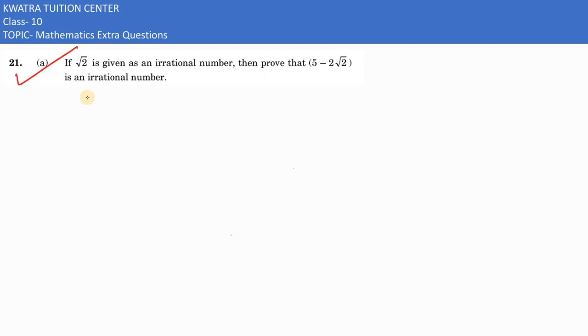So now in the 21st part, it's given that root 2 is an irrational number and you need to prove that this value is nothing but irrational. So first of all, we assume what is our number? It's a rational number.